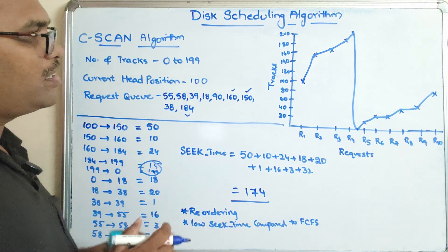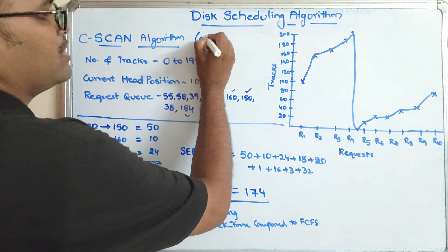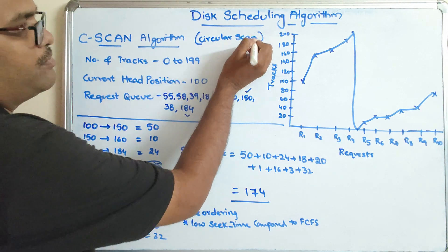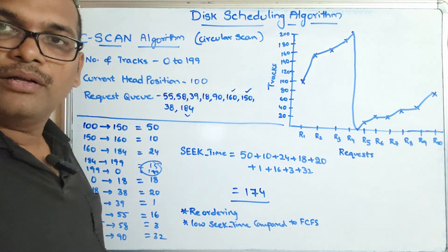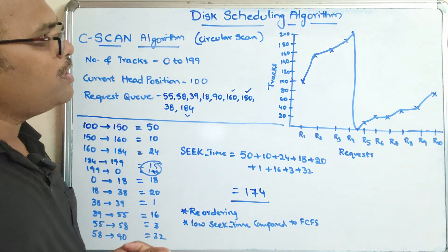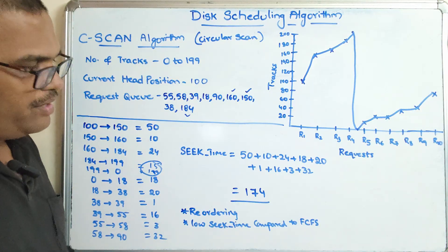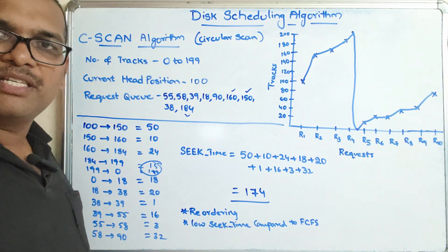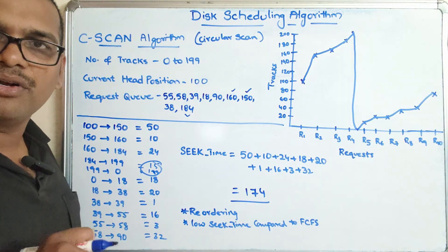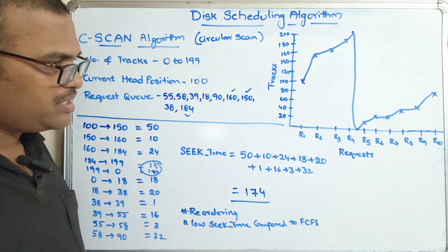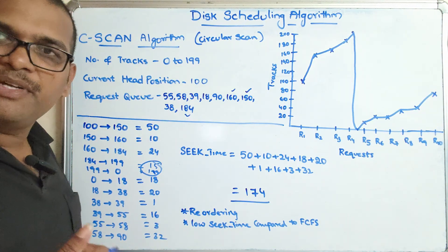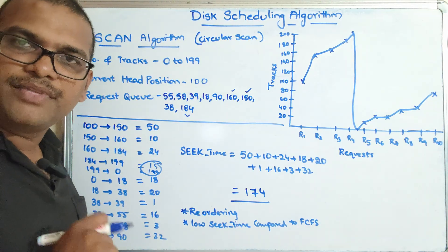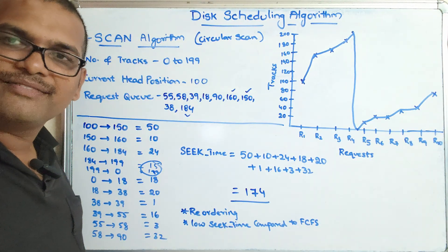This is the C-scan algorithm, which is the circular scan algorithm. Hope you understood this. If you have any queries, feel free to post your doubts in the comment section. I will try to clarify all your doubts. If you enjoyed the session, like and share it with your friends, and don't forget to subscribe to our channel. Thanks for watching. Thank you very much.